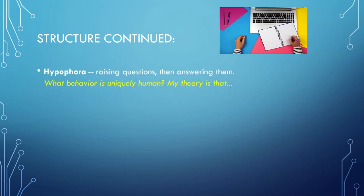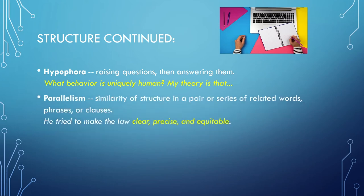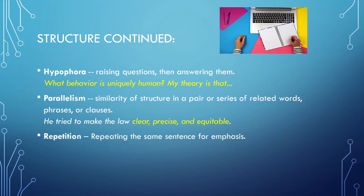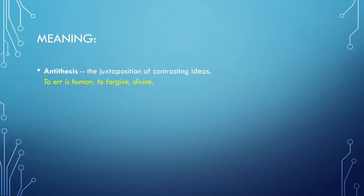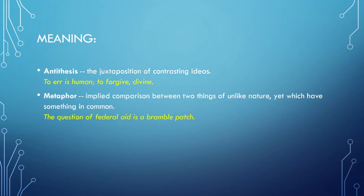A few more structural terms: hypophora — raising questions then answering them. Parallelism — similarity of structure in related words or phrases. And of course, repetition. Moving on to meaning: antithesis — contrasting ideas placed together. Metaphor — an implied comparison between two things of unlike nature that have something in common, not using 'like' or 'as' (that would be a simile). The metaphor can be very powerful — it's important that you understand the terminology used. For example, 'the question of federal aid is a bramble patch' — if you don't know what a bramble patch is, you wouldn't catch the negative connotation.